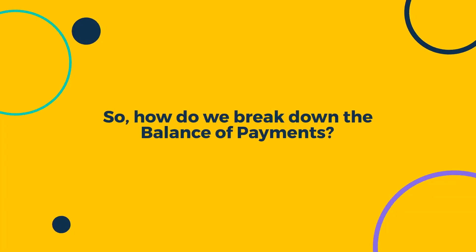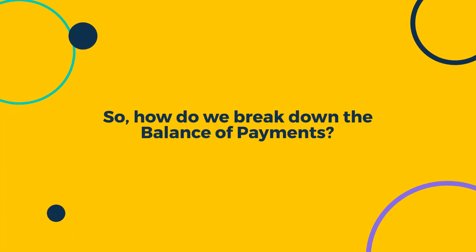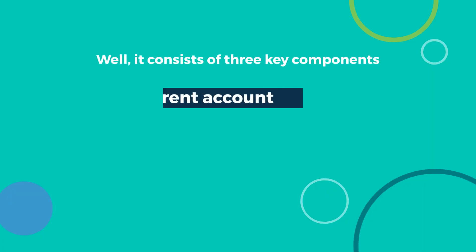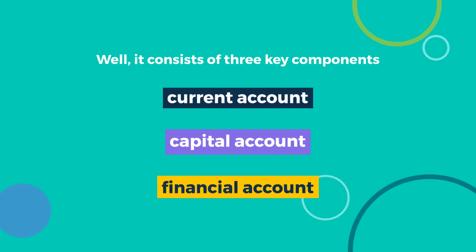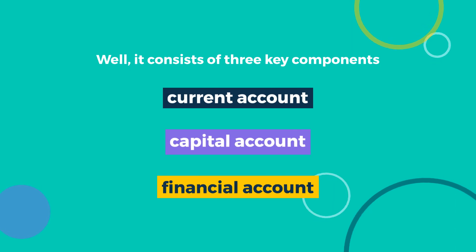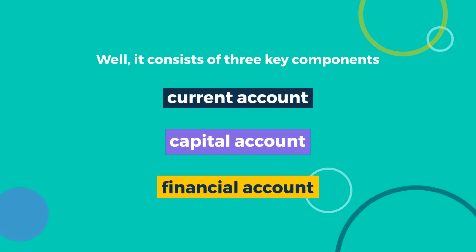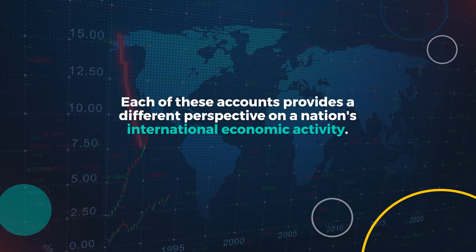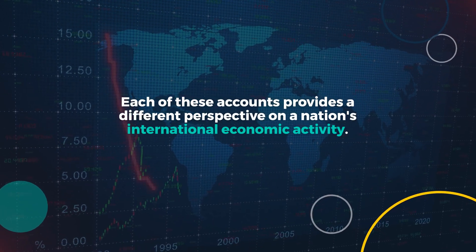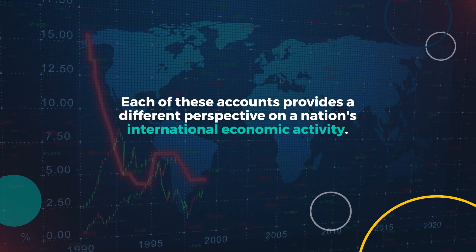So, how do we break down the balance of payments? Well, it consists of three key components: the current account, the capital account, and the financial account. Each of these accounts provides a different perspective on a nation's international economic activity.